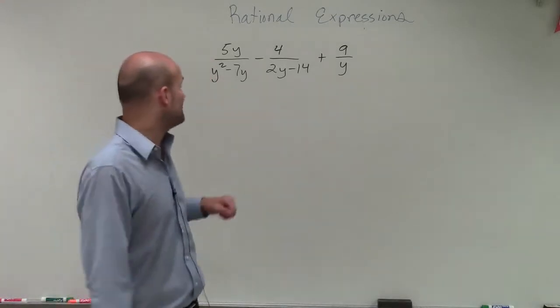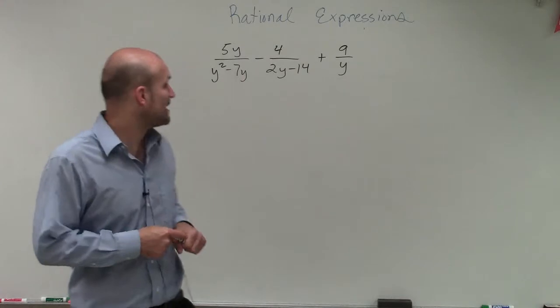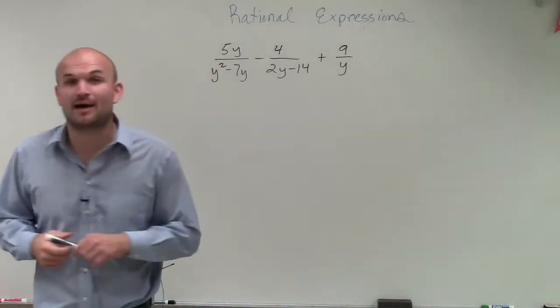So here we have 5y divided by y squared minus 7y, minus 4 divided by 2y minus 14, plus 9 divided by y.